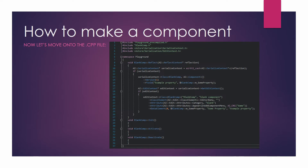Within the reflect function, we use azrtti_cast to link the code into SerializeContext. If serialized context is not null, we start setting up our component in the editor. We do serializeContext->Class<BlankComp, AZ::Component>() and set the version to 1. Since our component is going to have an example property where you can type stuff, we create a field called example property and link it to the string we made in the .h file. Next, we set editContext to serializeContext->GetEditContext(). If that's true, we set the class element, the attributes, and a data element for that example property.